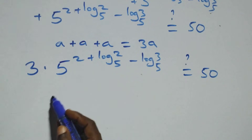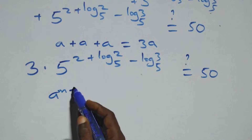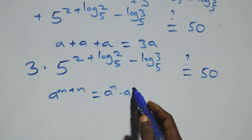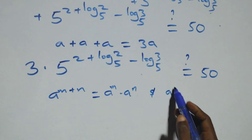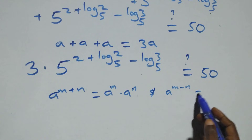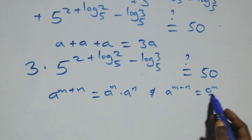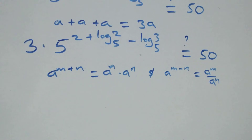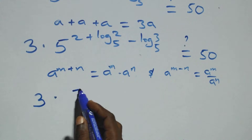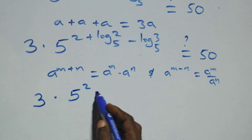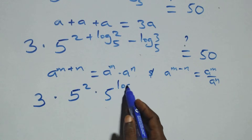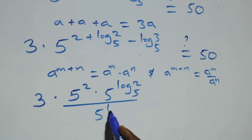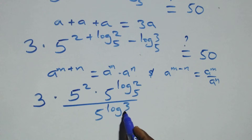This follows the law of indices. When we have a raised to power (n plus n), it equals a raised to power n times a raised to power n. Also, a raised to power (n minus n) equals a raised to power n over a raised to power n. So we can write 3 times 5 squared, times 5 raised to power log 2 base 5, over 5 raised to power log 3 base 5, equals 50.